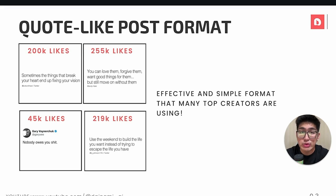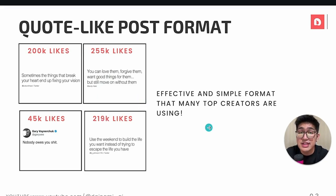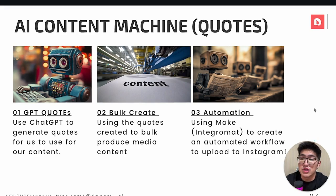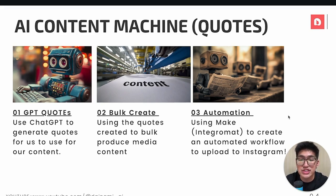So what are we building today? As you can see over here on the left, there are many quote-like posts that are very effective on Instagram, getting hundreds of thousands of likes. This is a very effective and simple format that we can use AI to automate for us. Firstly, we're going to use GPT to generate quotes. Following that, we'll use Canva to design and bulk create the media content. And last but not least, we're going to connect everything using Make AI automation to upload all of the posts onto Instagram while we sleep.